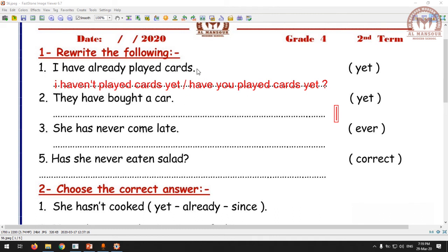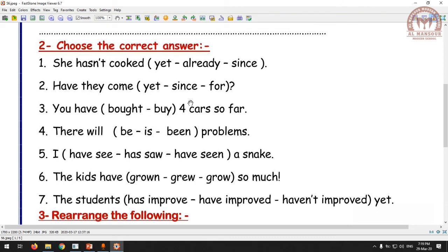You're going to choose the correct answer. I'm going to do one for you. She hasn't cooked yet, because yet comes at the end of the sentence. Already doesn't come at the end of the sentence. You can do the rest by yourself.